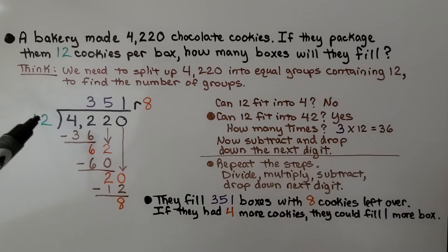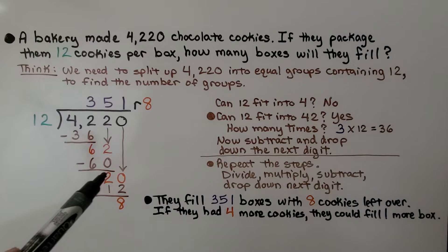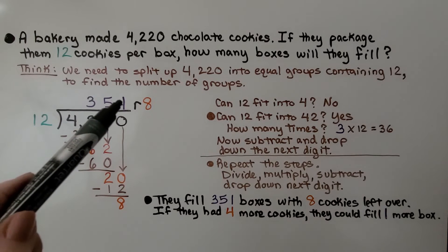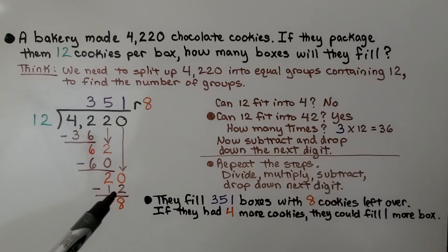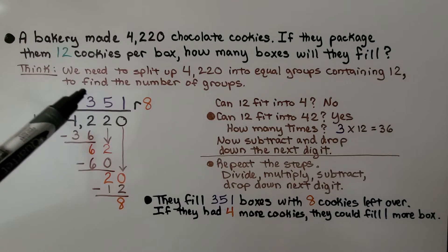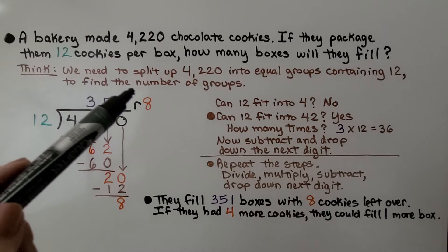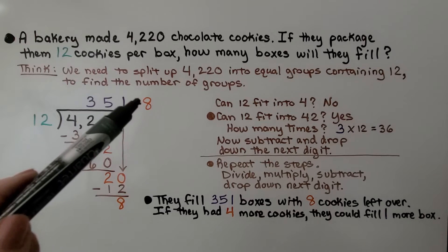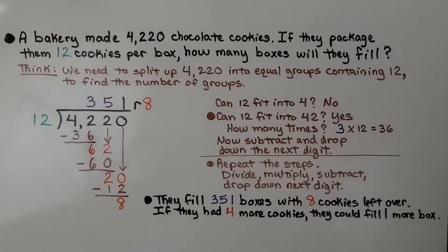Now it's this 0's turn to come down. How many times 12 fits into 20? Only one time. So we put a 1 above that 0 we drop down. And 12 times 1 is 12, we subtract that and we get an 8. That means they can fill 351 boxes with 8 cookies left over. And if they had 4 more cookies, they could fill 1 more box.